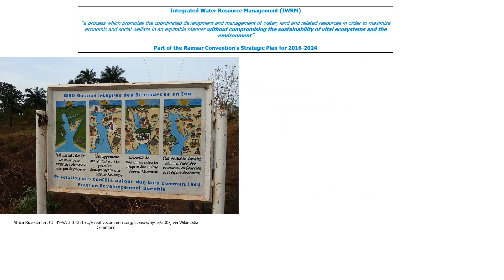Integrated water resource management is a process which promotes the coordinated development and management of water, land, and related resources in order to maximize economic and social welfare in an equitable manner without compromising the sustainability of vital ecosystems and the environment. It's an example of where biodiversity data can be applied for management and policy at the catchment scale, and the Ramsar Convention included integrated management as part of its strategic plan for 2016 to 2024.